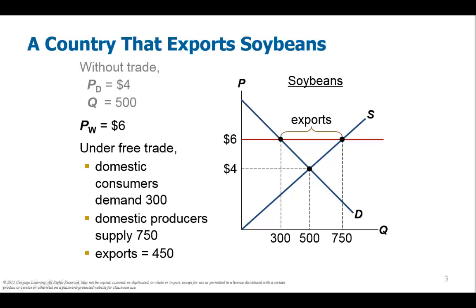If however this country chooses to sell internationally, the price goes up from $4 to $6. As you can see, domestic demand goes from 500 units to 300 units — a decrease of 200 units. At the same time, supply increases by 250 units. So the producers, the soybean farmers, would lose 200 units from the domestic market when the price increases by $2, but would gain 250 units on the international market.